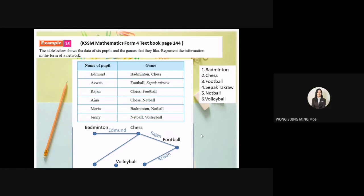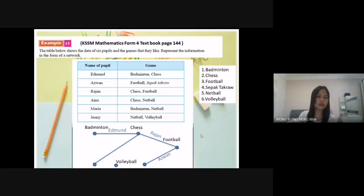Maria, badminton, netball. So from badminton to netball, and I label it as Maria. The last one, Jenny, netball and volleyball. So from netball to volleyball, I draw the line and label it as Jenny.